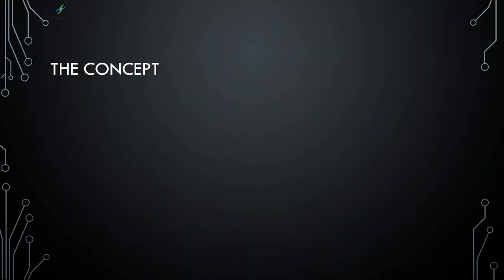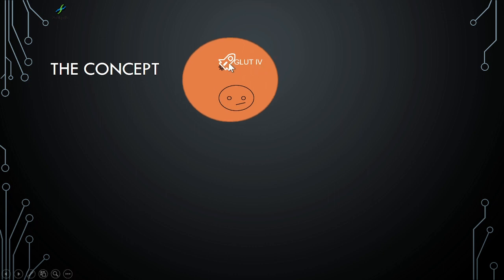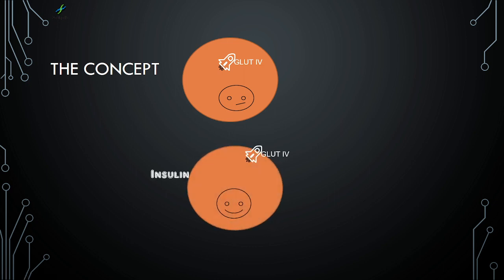Let us look at the concept. Typically, GLUT4 is a transporter which helps the transportation of glucose, which is extracellular in the bloodstream into the cell, that is the cytoplasm. This remains inside the cell. Whenever insulin is present, it gets transferred to the transmembrane. A transaction of glucose can now happen from outside to inside of the cell.